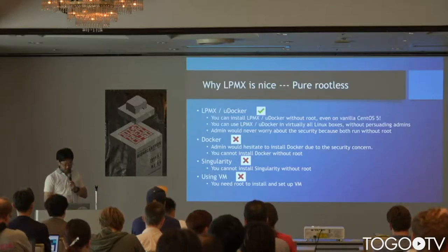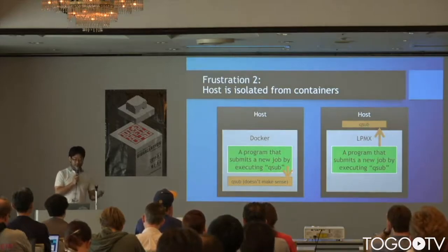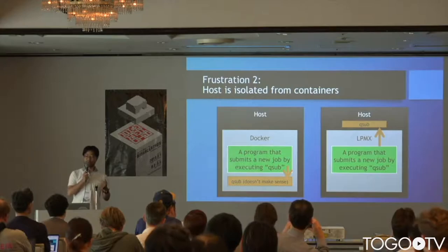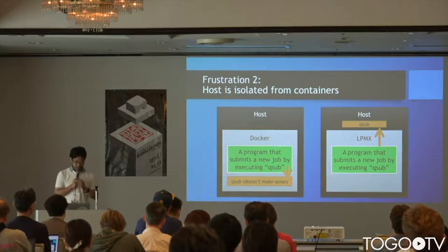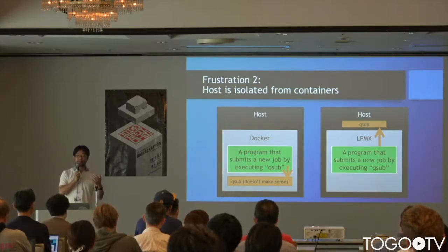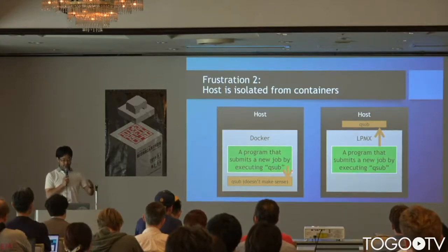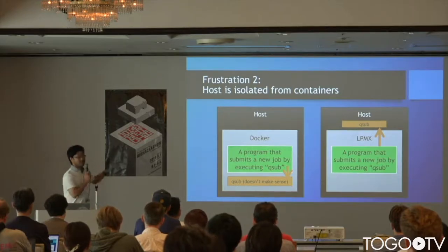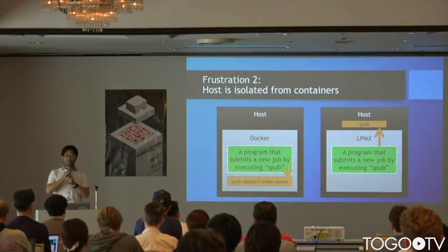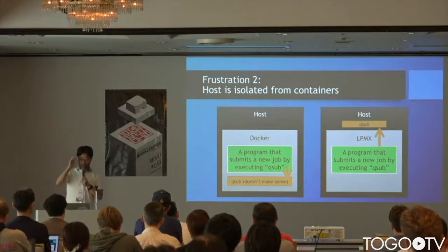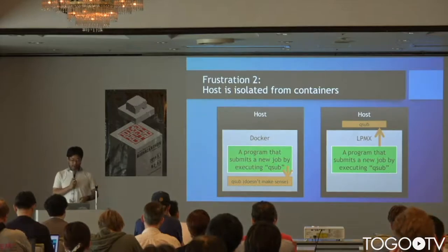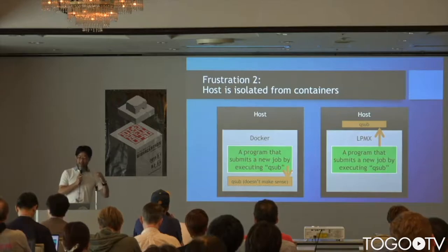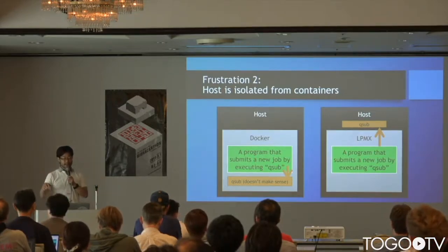The frustration with existing container systems is that the host is completely isolated from the containers. For example, imagine you want to assemble an insect genome and run Canu Assembler inside Docker. Canu Assembler tries to use lots of computational resources via a grid engine, so its master control program submits many new jobs by executing qsub. But you can't install qsub inside a Docker image — you want to call qsub, qstat, or any grid engine related commands on the host, not inside the container. LPMX is a composable container system, so you can call qsub or qstat from inside a container and interact with the host system.